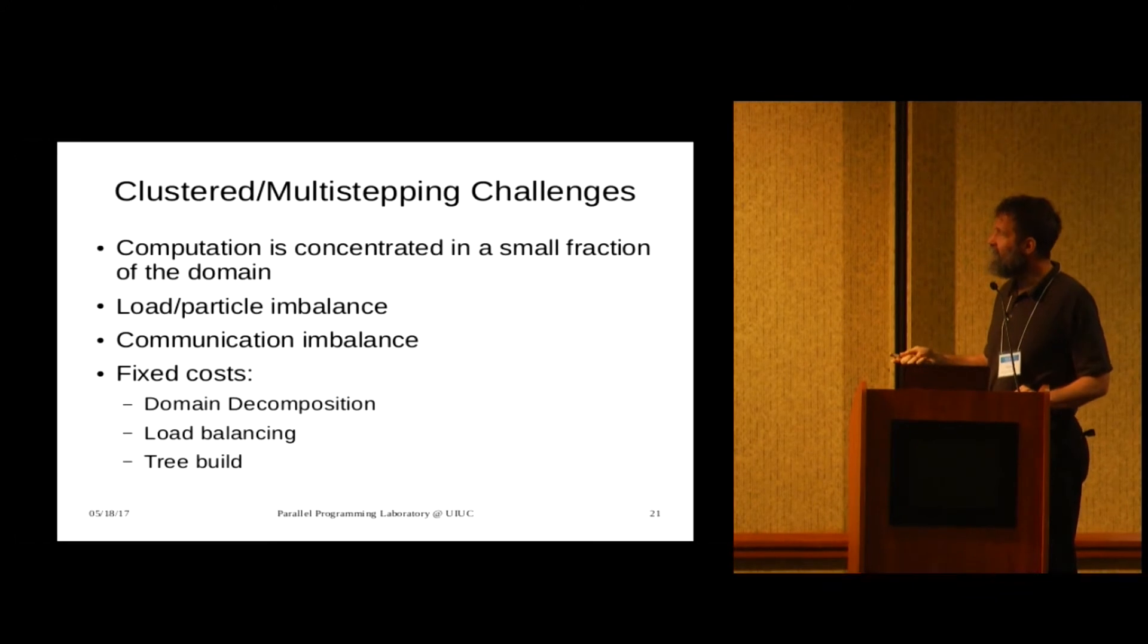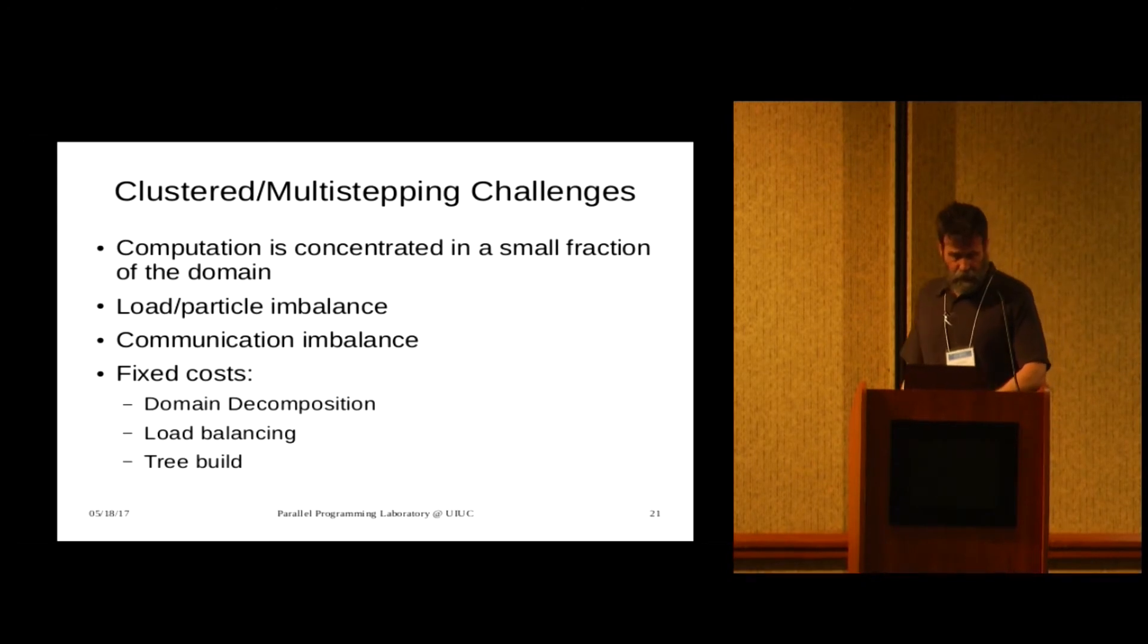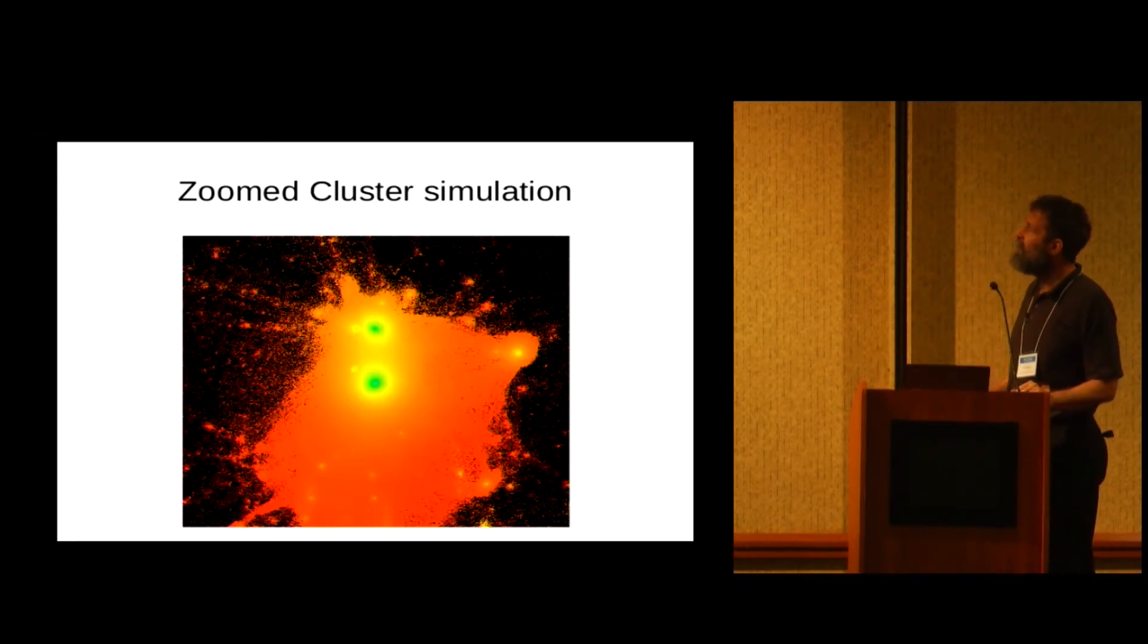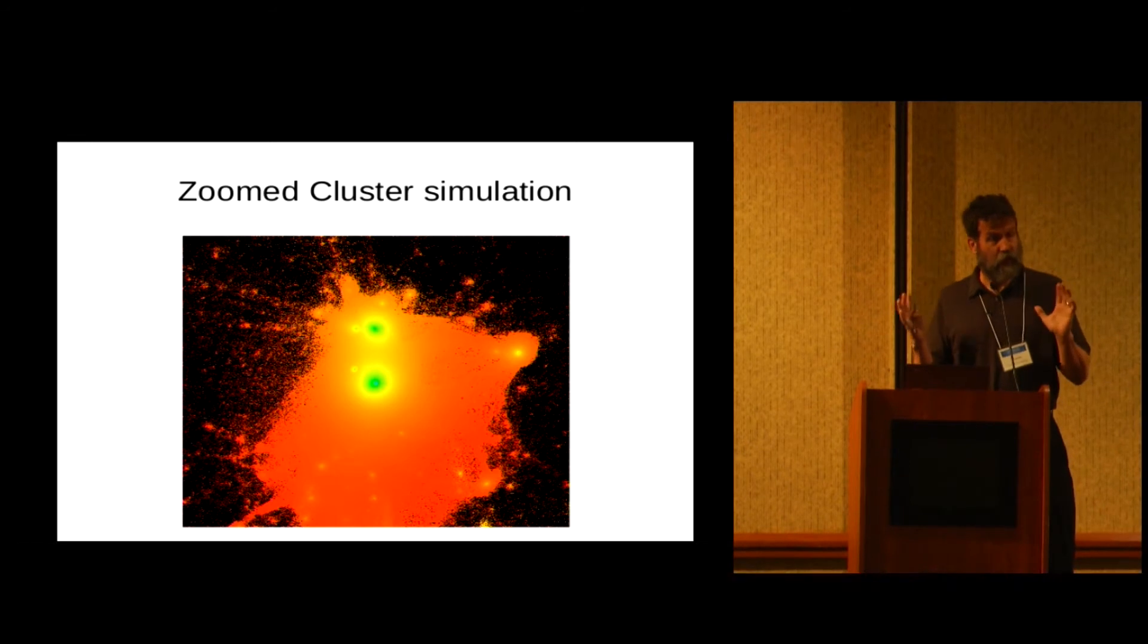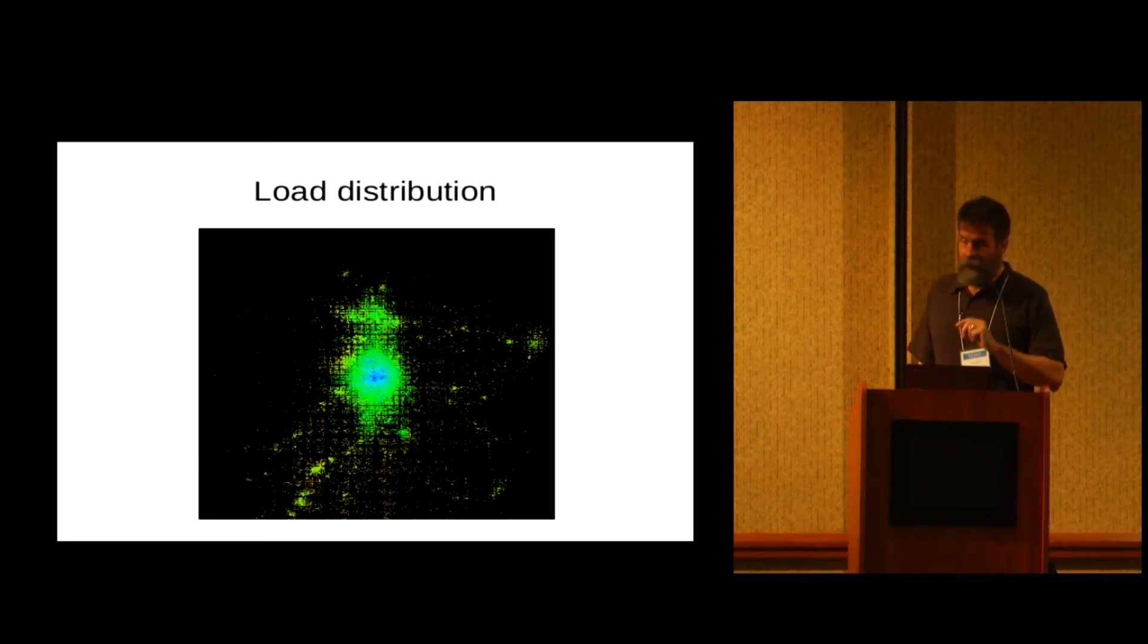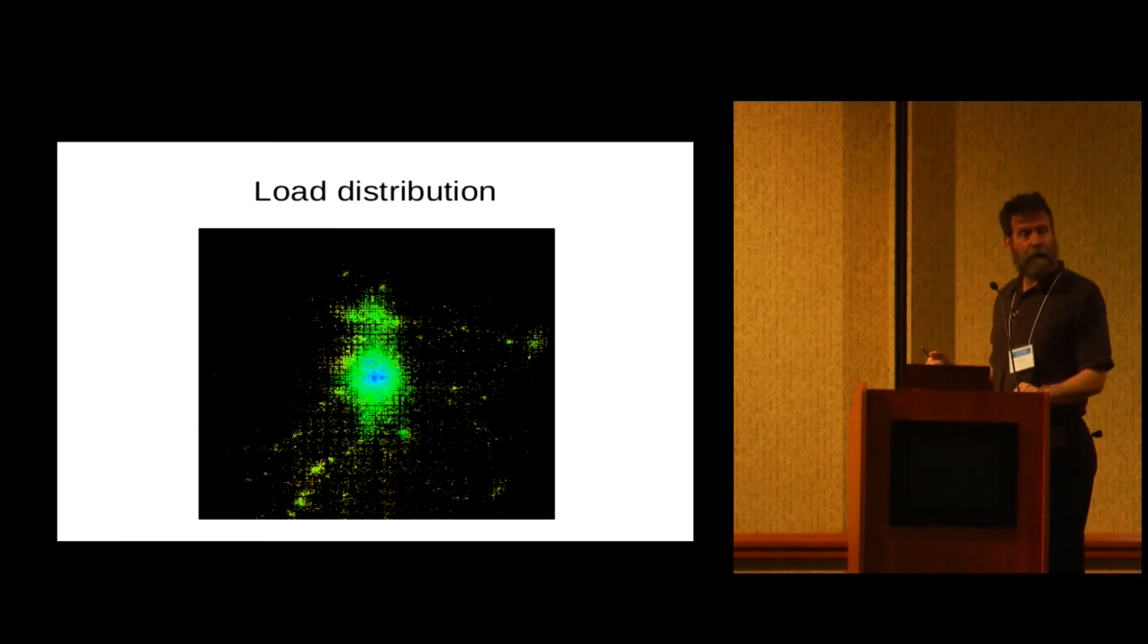I've already mentioned this one. Another thing is that the computation per resolution element also varies widely. So you have this extra load imbalance and you have this extra communication imbalance. So if you look at a cluster, this is the dark matter distribution of a small piece. This is just the center part of my simulation where the cluster is.